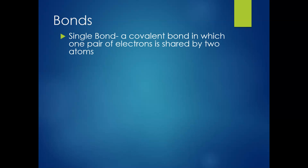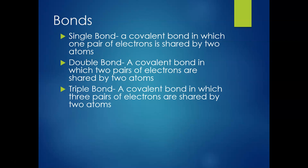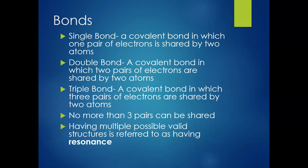A single bond is a covalent bond in which one pair of electrons is shared by two atoms. A double bond is a covalent bond in which two pairs — four electrons total — are shared. A triple bond is a covalent bond in which three pairs — six electrons — are shared by two atoms. You can't have any more than a triple bond; there's no such thing as a quadruple bond. If there's not a clear place to put a double or triple bond, that often means there are multiple valid structures — we refer to this as resonance.